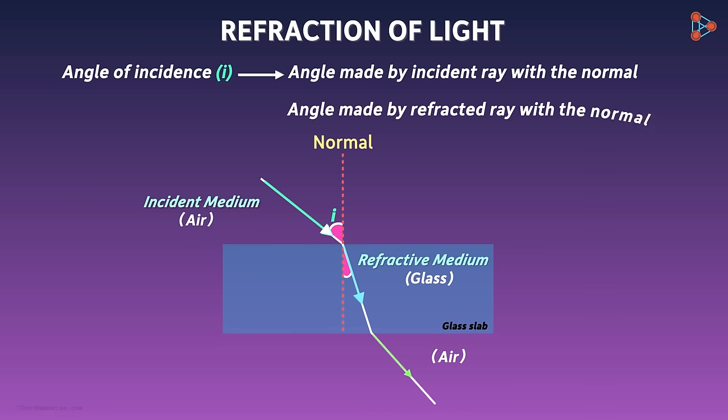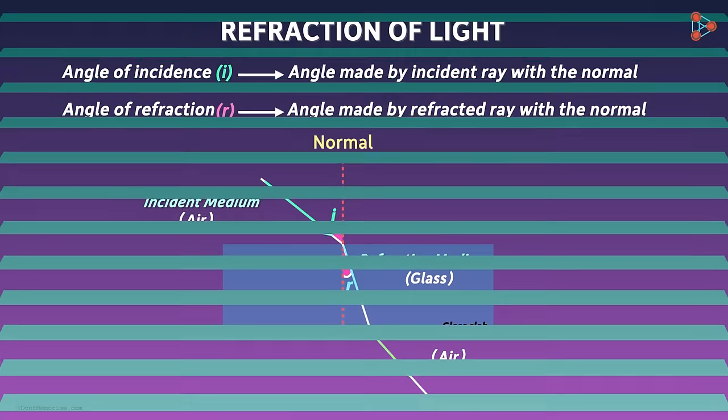And this is the angle made by the refracted ray with the normal. It's called the angle of refraction R. Now there might be various questions that you have.